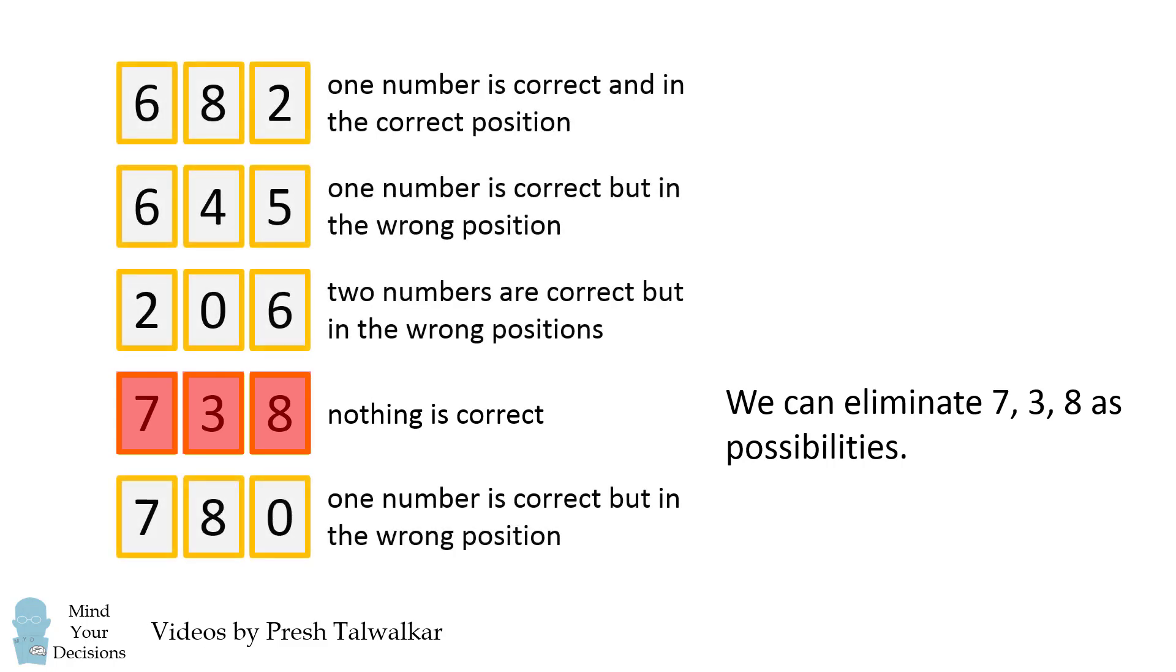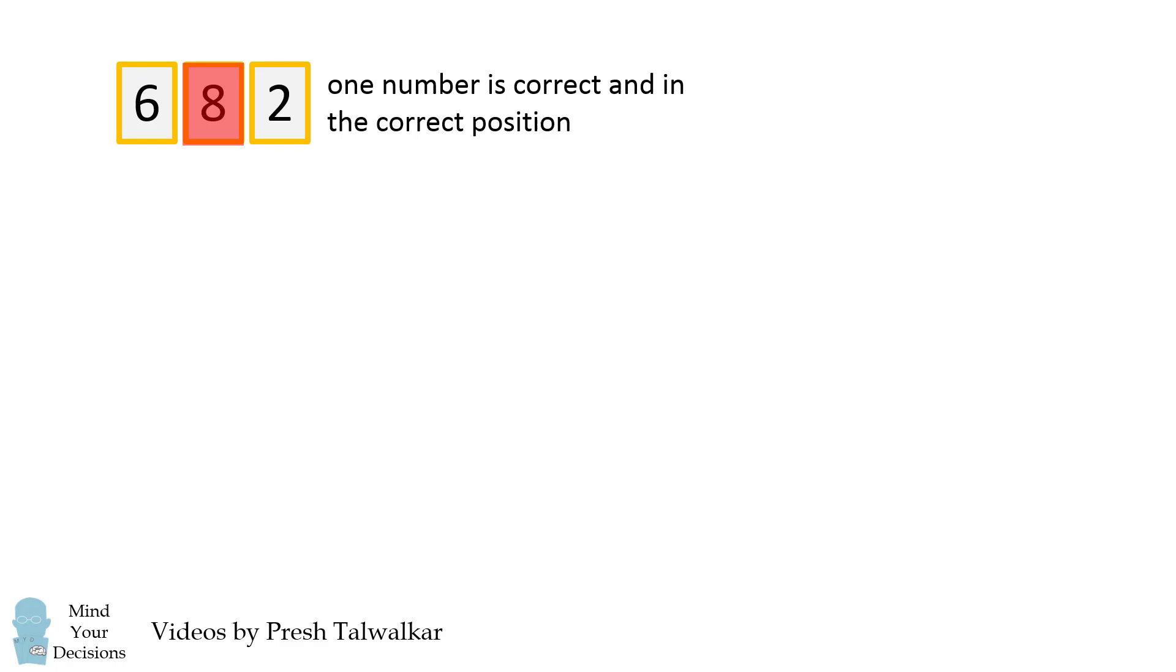When we look at all of the other numbers, we know that wherever we see an 8, or a 7, or a 3, we can say that cannot be the correct number. Now let's just start working from the first clue. We know that one number is correct and in the correct position, but 8 is not a correct number. This means either 2 is correct or 6 is correct, but they're both not correct. Otherwise, we'd have two correct numbers.